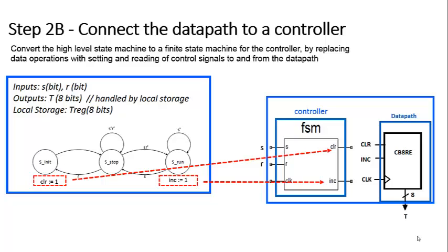This will set the output of the finite state machine called clear to be 1, which will in turn cause the datapath component, our counter clear, to be asserted, which would cause our counter to be cleared to 0. Likewise, our increment is defined in our S_run state in our finite state machine, and we see that increment being our output out of our finite state machine is indeed an input into our datapath component.